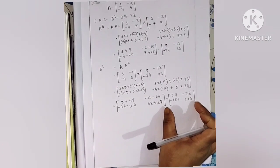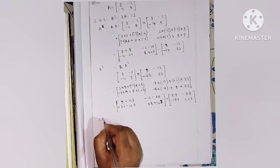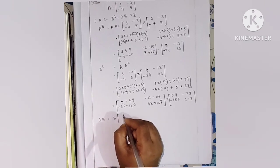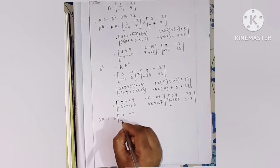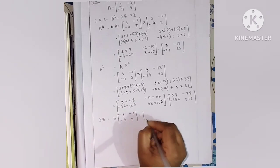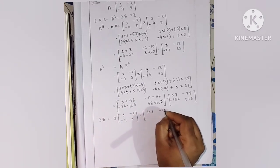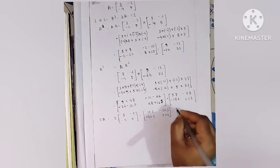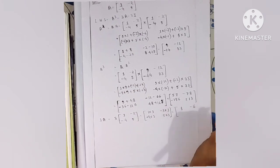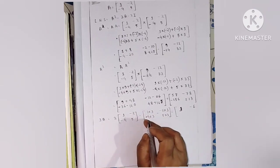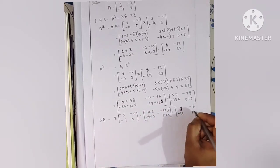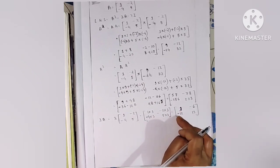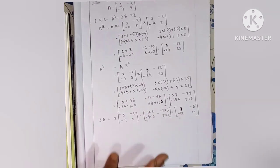Now we compute 3A using scalar multiplication. 3A = 3 × [1, −2; −4, 5] = [3, −6; −12, 15].